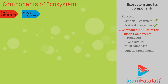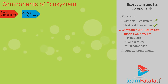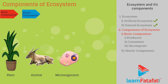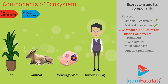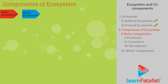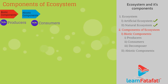Biotic components are the living organisms of the ecosystem — for example, plants, animals, microorganisms, and human beings. Biotic components can be further classified as producers, consumers, and decomposers.